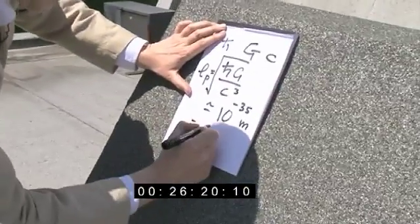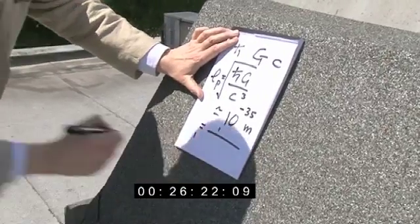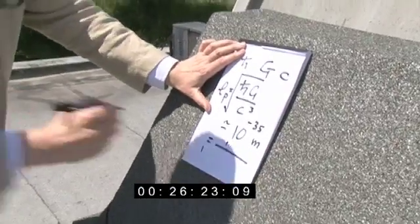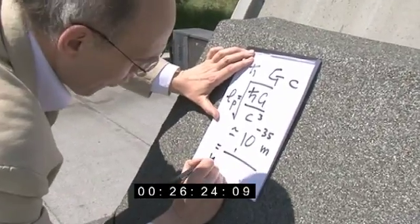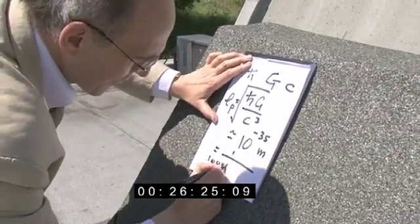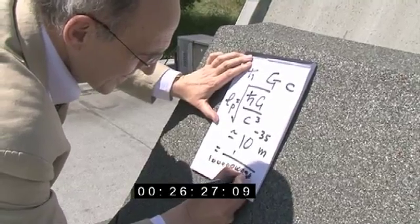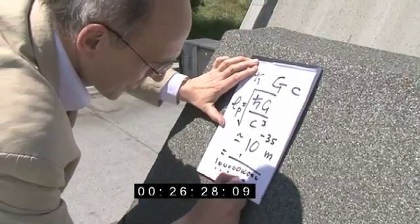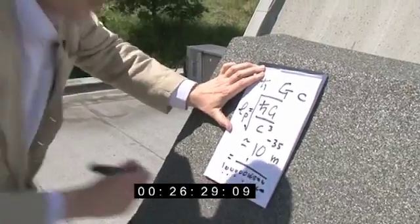That's 1 over 1 with 35 noughts after it. Let me write it down — 1, 2, 3, 4... and 35 of those zeroes. So that's how big it is in metres — a very, very small length.